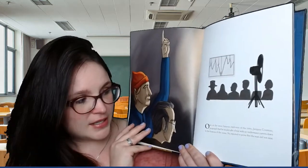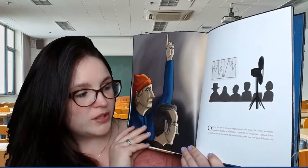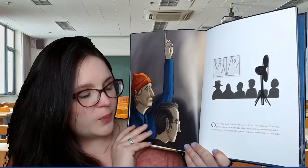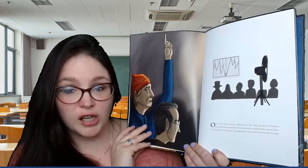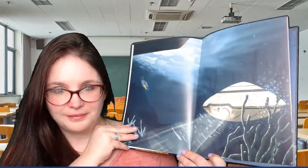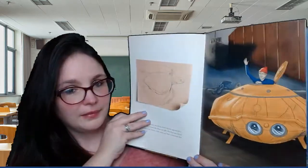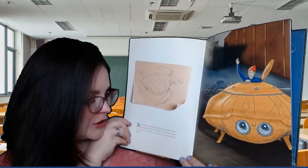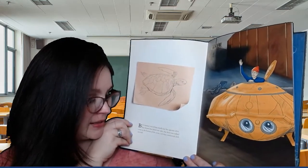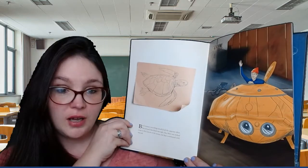One of the most famous explorers of the time, Jacques Cousteau, proposed that he would take a boat with an underwater camera down to the bottom of the ocean. He expected to prove that the tear did not exist. But Cousteau's recordings actually had the opposite effect — they showed that Marie was right, that there was indeed a tear in the bottom of the ocean, and that continental drift was real.